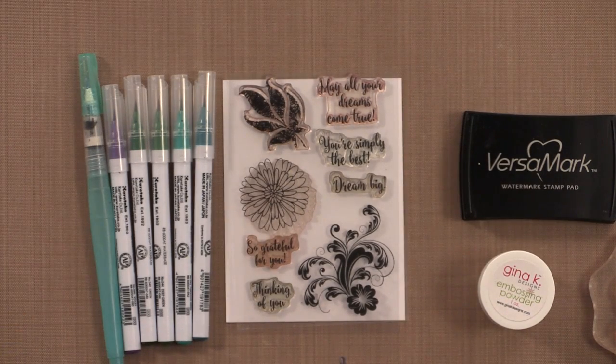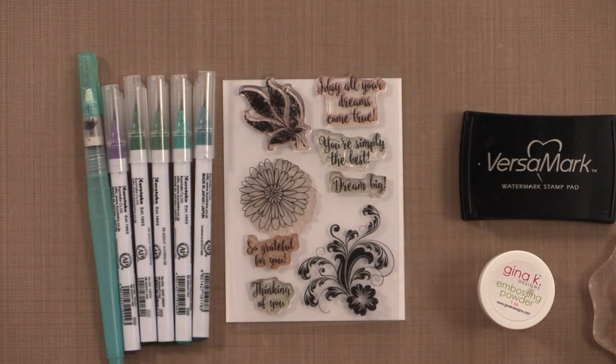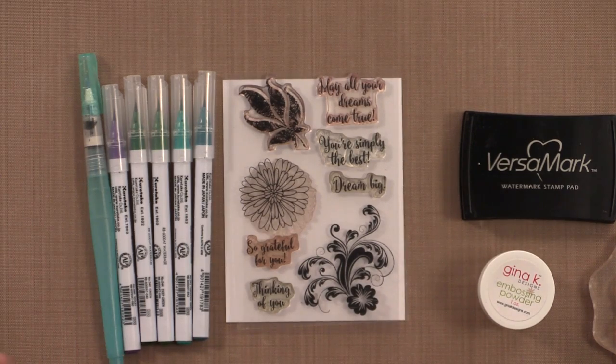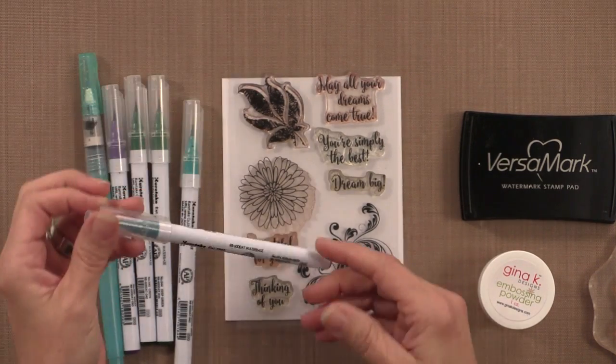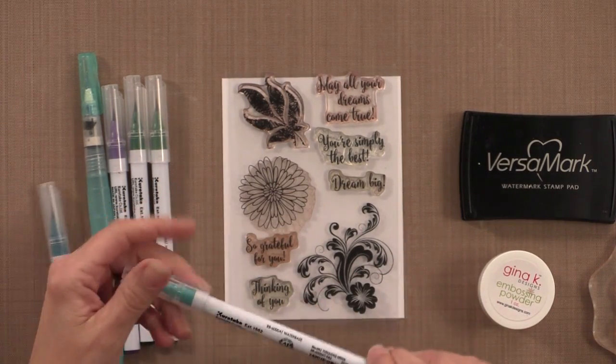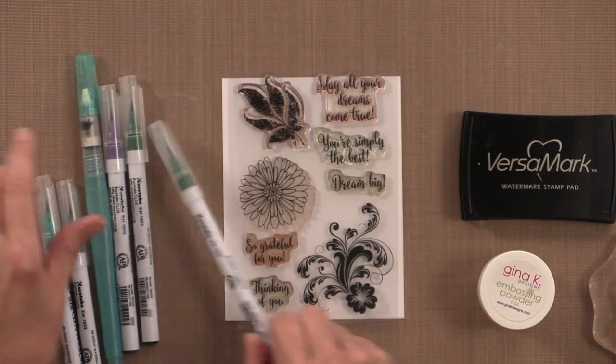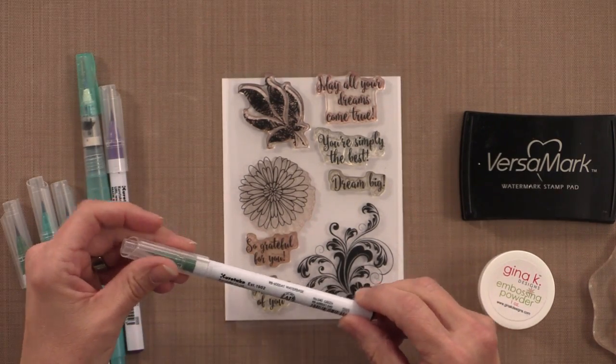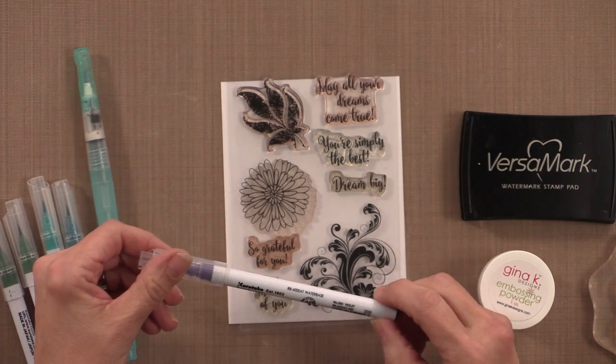Let me show you the tools and products you're going to need to do this technique. First you're going to need some Zig Clean Color markers or any kind of watercolor or water-based markers. The colors I grabbed are Persian Green, Turquoise Green, Deep Green, Green, and Violet.